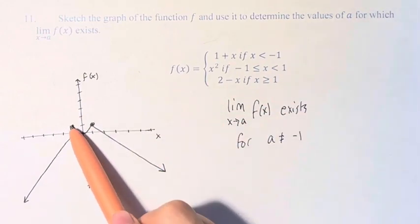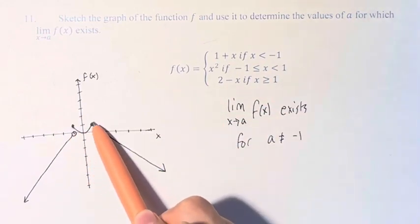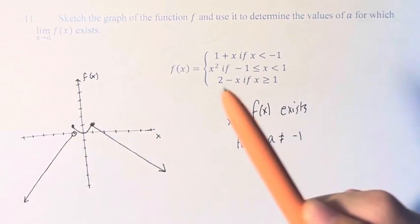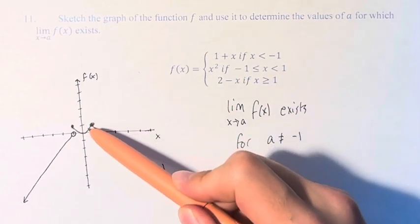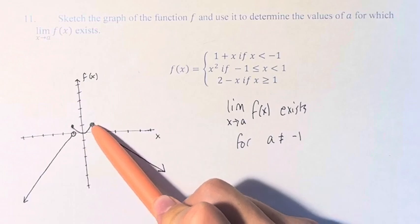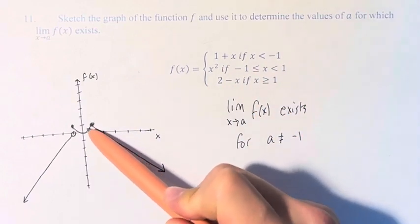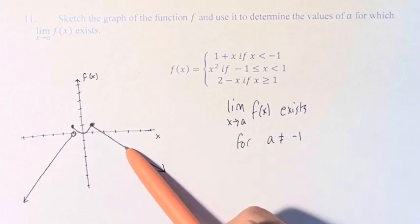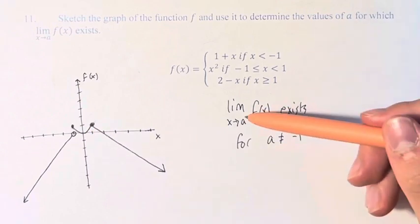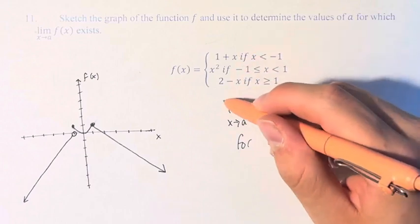Are there any more values? Well, we start here. We continue along the parabola, and it's continuous along the parabola. Then we get to the end of the parabola, but it's okay because 2 minus x and x squared approach the same value at the point where they switch off. At x equals 1, they're equal to the same point, so it's continuous. Therefore, this limit exists for all a except for a is equal to negative 1.